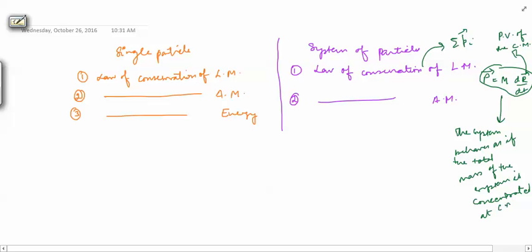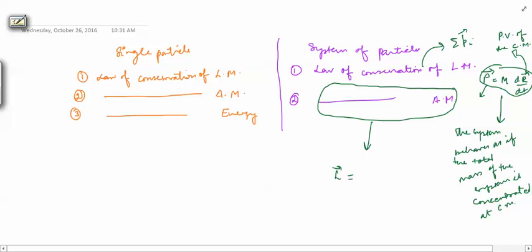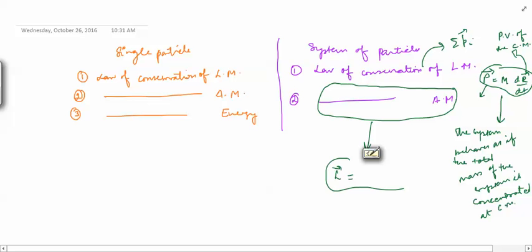The derivation of this relation was very simple — you can see in the last video how we did that. After that we established the law of conservation of angular momentum. Now we would like to have a similar relation that tells us how the angular momentum of the system is related to the angular momentum of the center of mass. That is what we will do now — we will try to establish such a relation in terms of the total mass and the position vector of the center of mass.